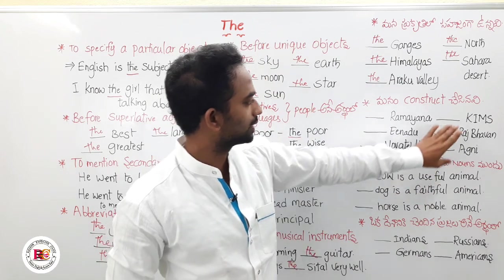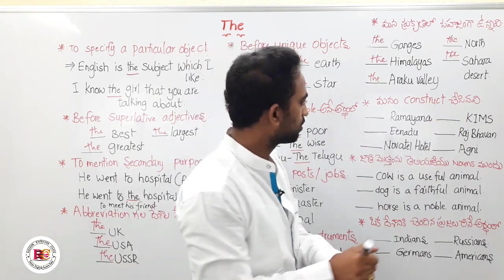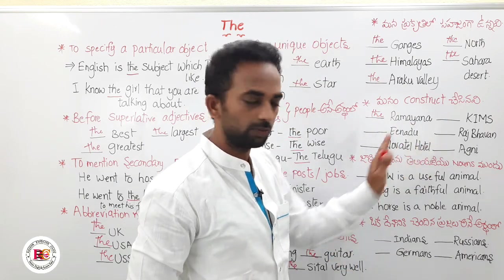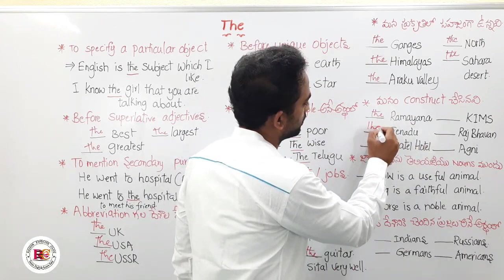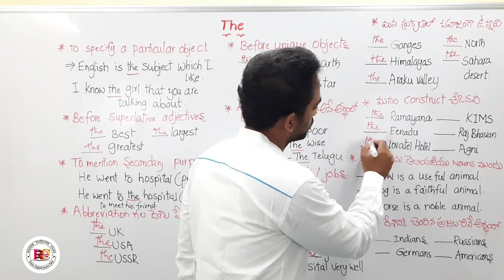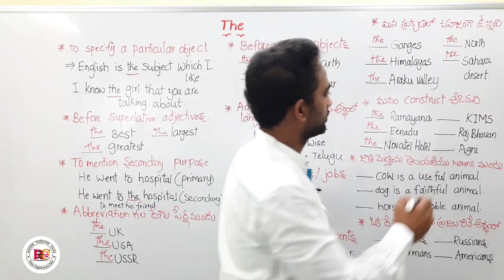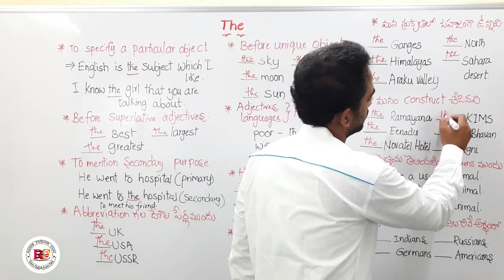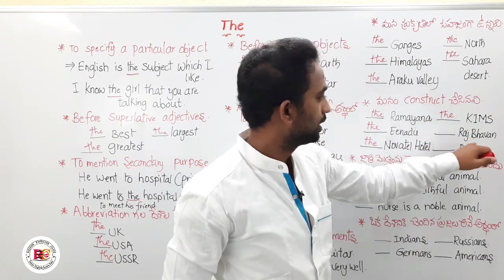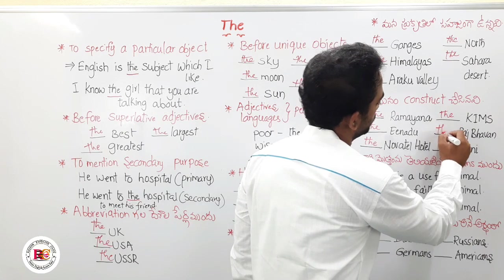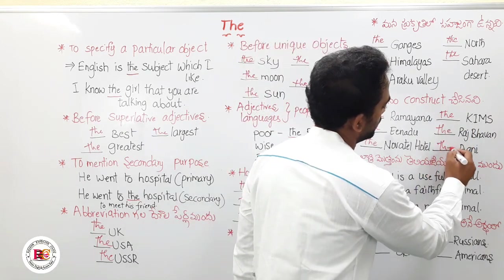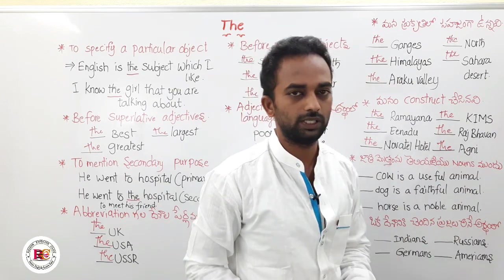Here are a few examples: 'The Ramayana' — the Ramayana is a holy book, so we use 'the Ramayana.' For hospitals, we also use 'the' — for example, 'the hospital.' The Agni is a missile weapon, so we say 'the Agni.' These illustrate the rule for holy books, buildings, and weapons.